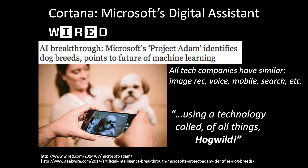Many large companies have something similar for image recognition, NLP, voice search, and more — all building large custom machine learning and deep learning stacks. The reason that I'll love the Microsoft article forever is a quote that said they were using a technology called, of all things, "Hog Wild!" This line made my heart sing for two reasons: the author was absolutely incredulous that a serious company would use such a ridiculously named thing, and she got the exclamation point correct, which I had fought hard for when we were writing the paper.